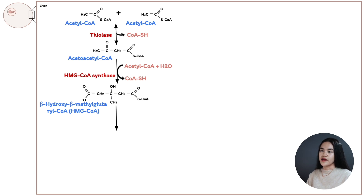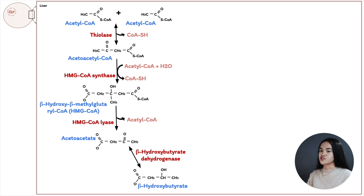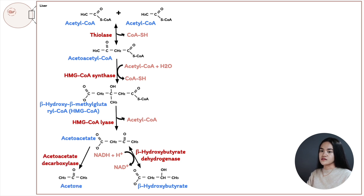HMG-CoA lyase converts HMG-CoA to acetoacetate, removing an acetyl-CoA in this reaction. Acetoacetate can then be converted to beta-hydroxybutyrate in a reversible reaction, where beta-hydroxybutyrate dehydrogenase reduces acetoacetate. When you hear a dehydrogenase enzyme, it signals that NAD+ is involved — in this reaction, NADH is converted to NAD+. Acetoacetate can also be converted to acetone by acetoacetate decarboxylase, removing a carbon dioxide. Beta-hydroxybutyrate is then transported to other tissues by blood, where it's oxidized to acetyl-CoA to yield energy.